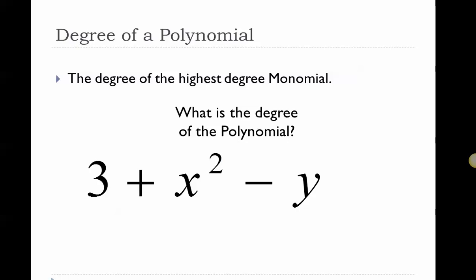Here's another one — I'm going to try to be a little bit tricky. The 3 is a monomial with a degree of zero. x² has a degree of two. y has a degree of one. Remember, monomials are separated by plus and minus, so I've got this as a trinomial. But the highest degree monomial is a second degree monomial, which we call a quadratic. Because that is the highest degree monomial, this is a second degree polynomial with a leading coefficient of one.